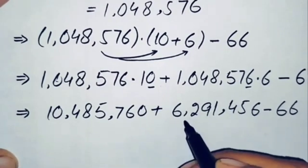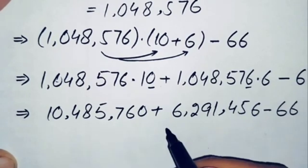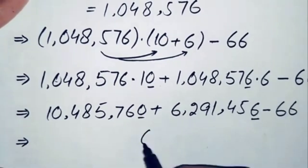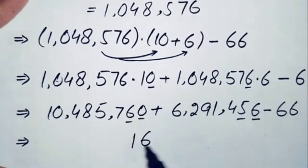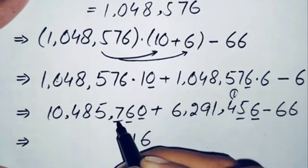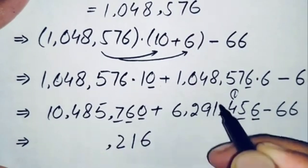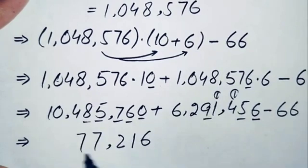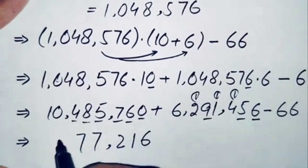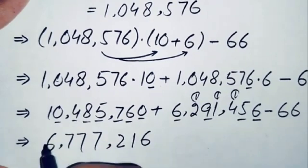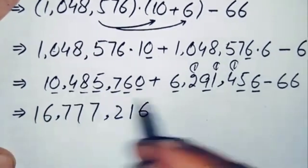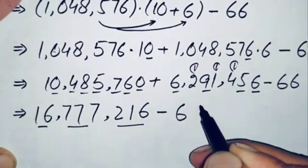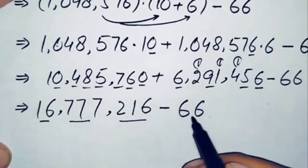Now we have two operations: one addition and one subtraction. First we add the two numbers: 10,485,760 plus 6,291,456. Starting from the ones position: 0 plus 6 is 6; 6 plus 5 is 11, write 1 carry 1; 7 plus 4 plus 1 is 12, write 2 carry 1; 5 plus 1 plus 1 is 7; 8 plus 9 is 17, write 7 carry 1; 4 plus 2 plus 1 is 7; 0 plus 6 is 6; and 1. So the addition gives 16,777,216.